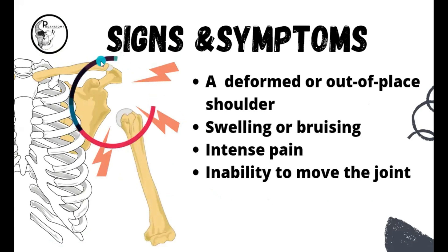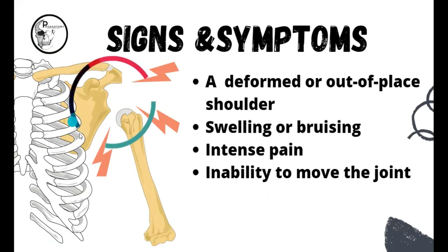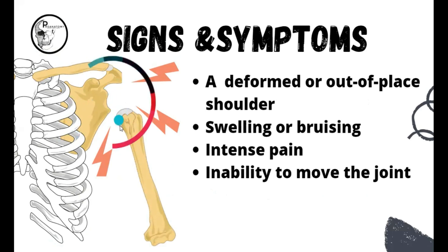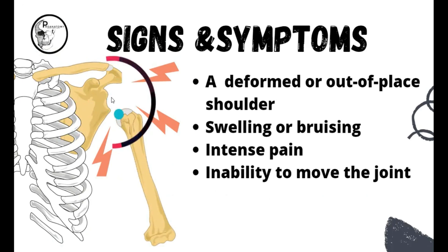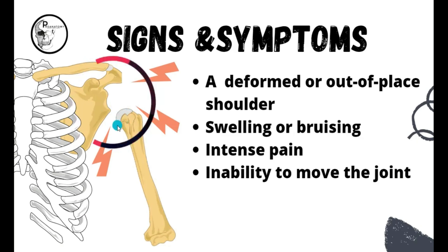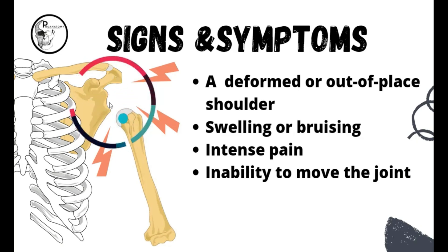So what might be the signs and symptoms of it? Here you can see a diagrammatic representation of shoulder dislocation, where you can see the normal shoulder joint. The head of the humerus should be coming in close proximity to the glenoid cavity, but instead it is displaced from that location and dislodged downwards.